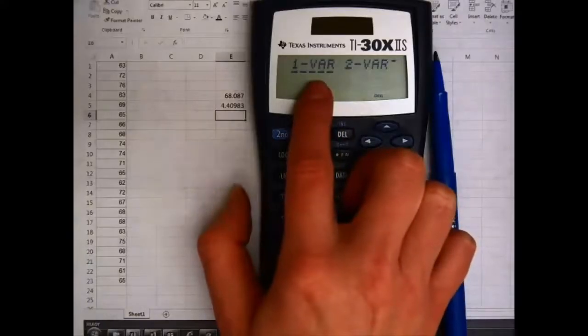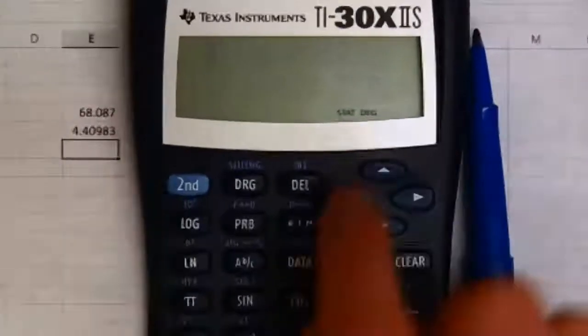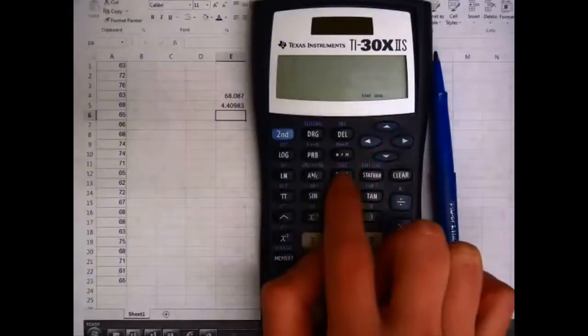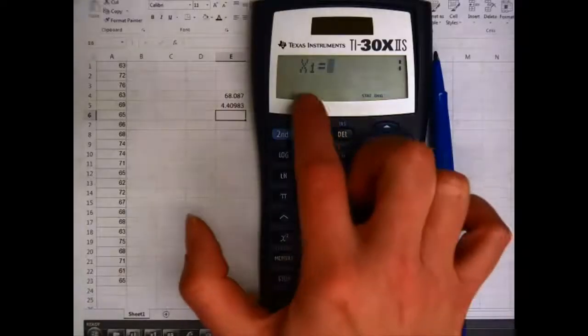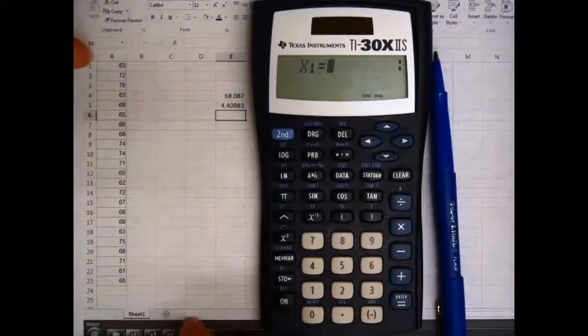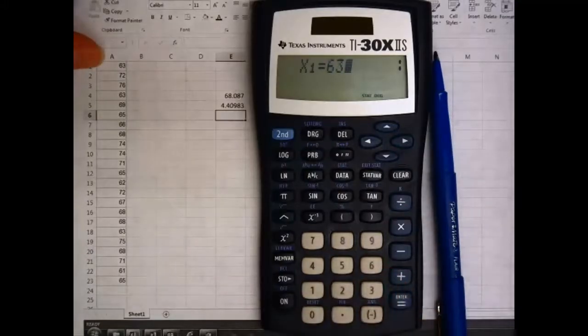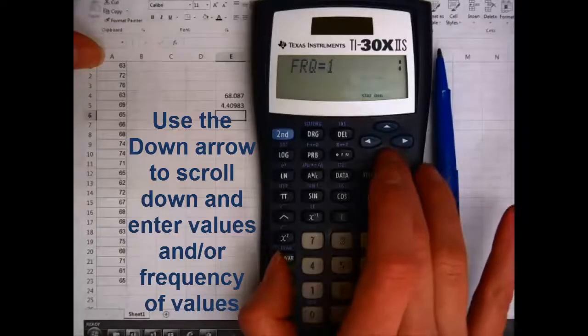We're just doing one variable computations here, so I'm going to hit enter. You can see down here in the display it now says stat. Now I'm going to hit the data key, and this is where I'll enter my data. X1 means what's the first variable in your list, so I have 63 in my list. Oops, I think I hit enter too soon. I wanted to hit down arrow next.